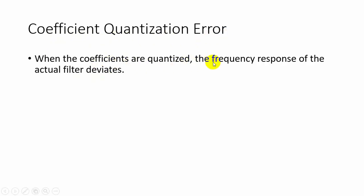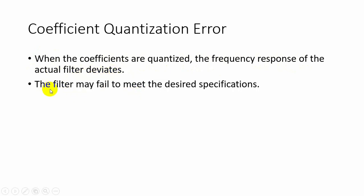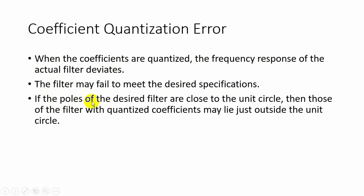When the filter coefficients are quantized, the frequency response of the actual filter deviates from the original value. Because of coefficient quantization, the filter may also fail to meet the desired specifications. When the poles of the desired filter are close to the unit circle, the quantized coefficients may lie outside the unit circle. Because of this we will get oscillations in the filter, so that a stable filter can be changed to an unstable filter. These are the effects we are facing because of coefficient quantization error.